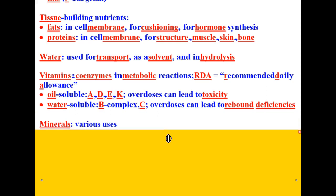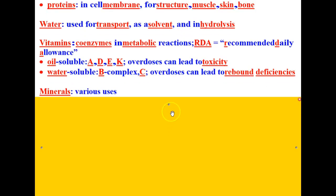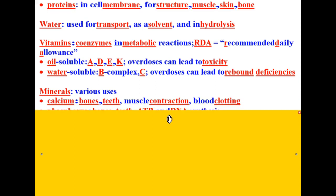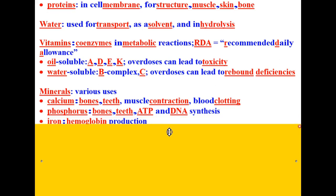We also have minerals that have various uses of importance in our body. Calcium, which is important for growth of bones and teeth, also important in muscle contraction and blood clotting. Phosphorus is important for the growth of bones, teeth, also in the production of ATP and DNA synthesis. Iron is important for hemoglobin production.